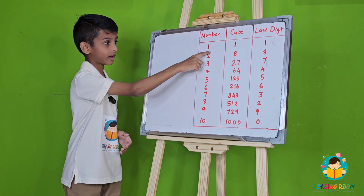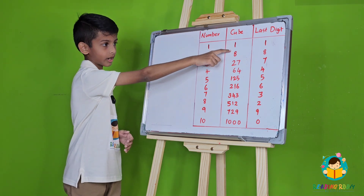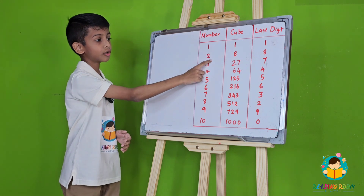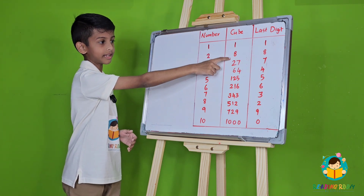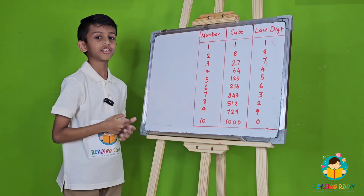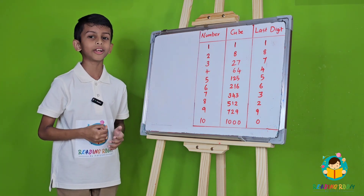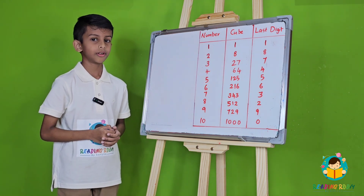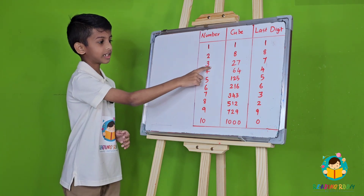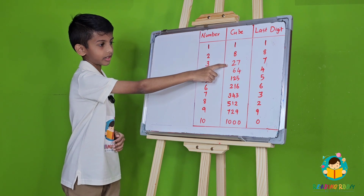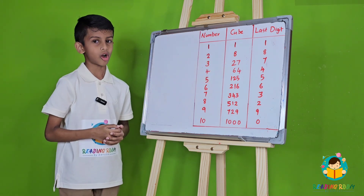So the cube of 1 is still 1. Cube of 2 is 8, which is 2 into 2 into 2. Cube of 3 is 27, and so on.